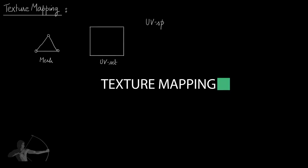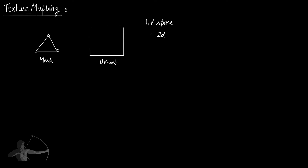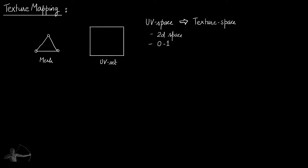A UV set is in the UV space, which is a 2D space in the range of 0 to 1, also called texture space. There is a slight conceptual difference between UV space and texture space, but because UV space will eventually be used to map a texture onto the mesh, we will consider them the same.